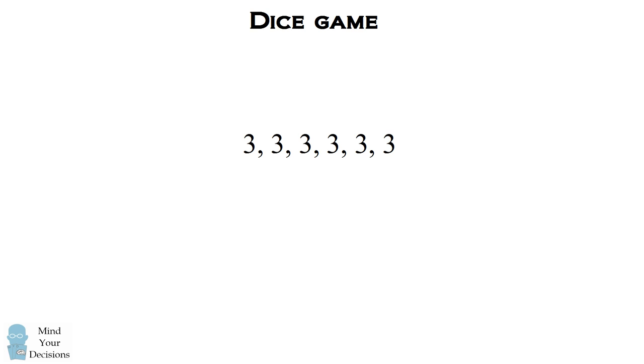One of the dice had all threes on all of its six faces. Another one had zero on two of its faces and four on four of its faces. A third dice had an equal number of ones and fives. And a fourth dice had two on four of its faces and six on two of its faces.